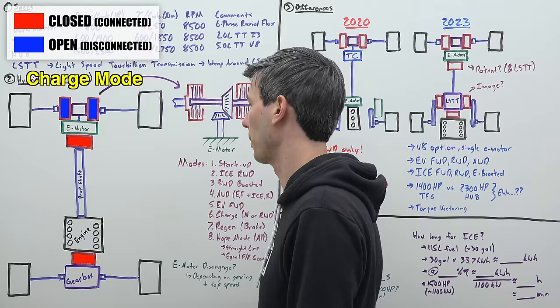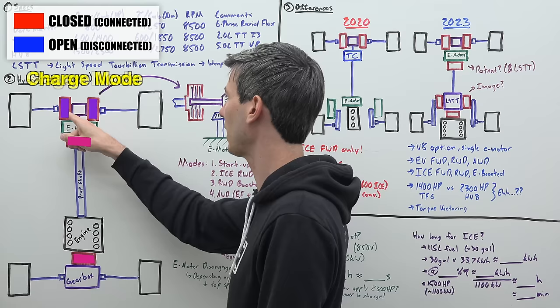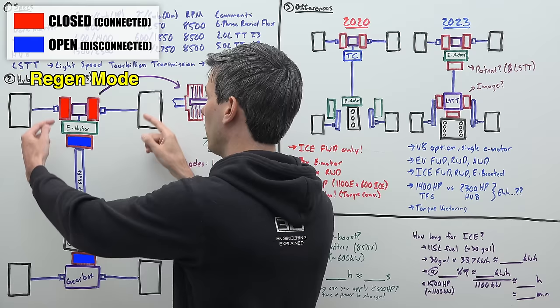Then you have a regen mode. This can be done with multiple different modes, but essentially what you're doing is you're going to engage these front clutches. You're going to use that energy and slow down the car using this electric motor and send that power to a battery pack.